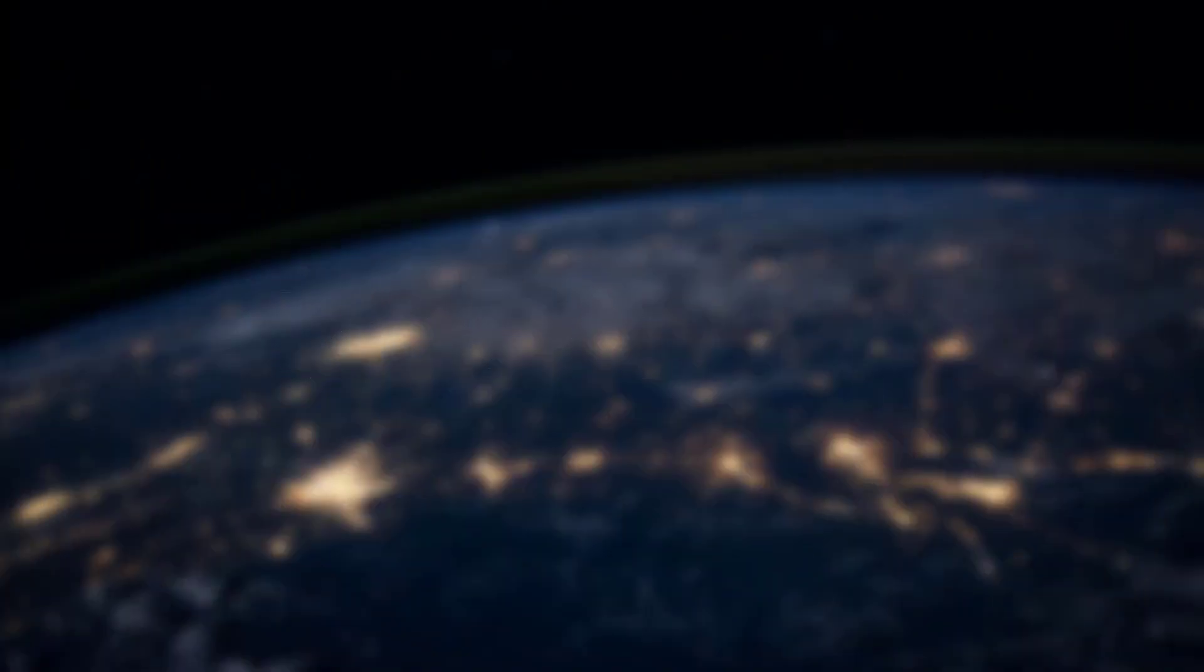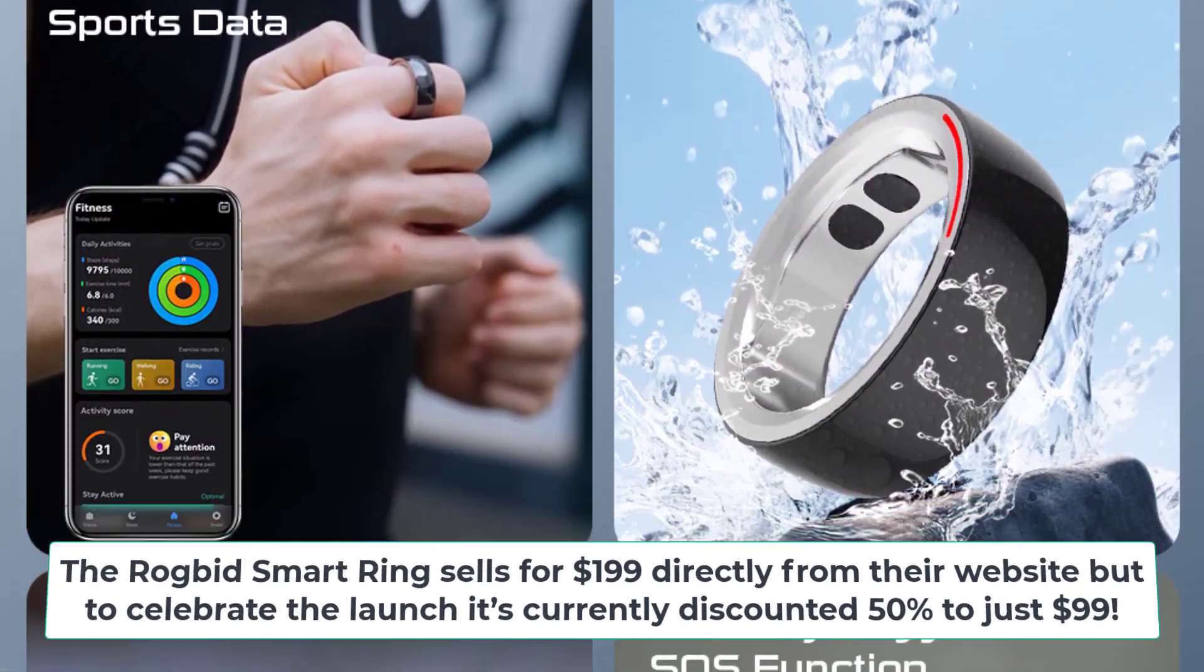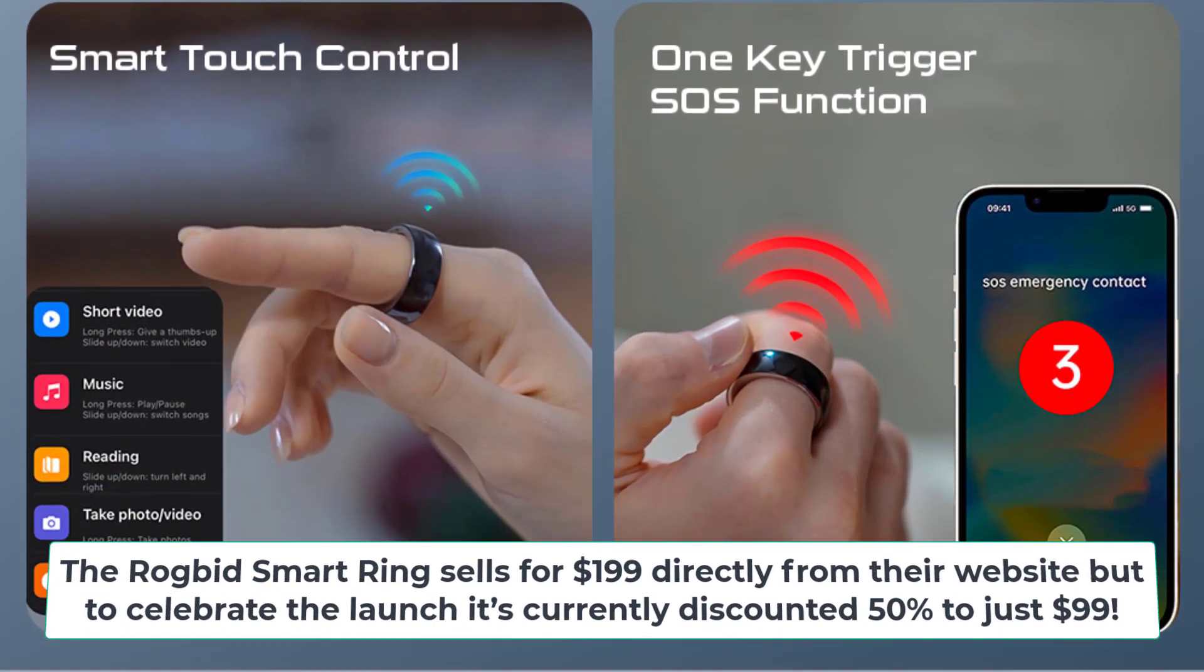Price and availability. The ROGBID Smart Ring sells for $199 directly from their website, but to celebrate the launch, it's currently discounted 50% to just $99.